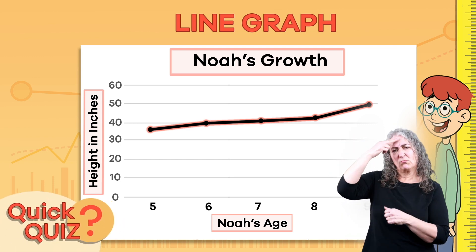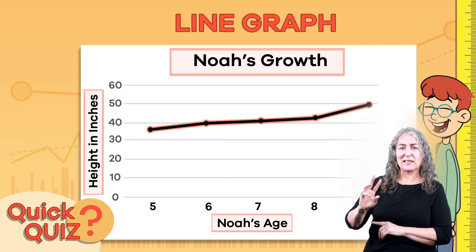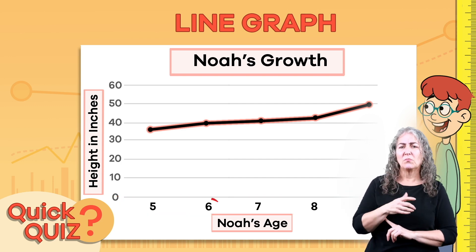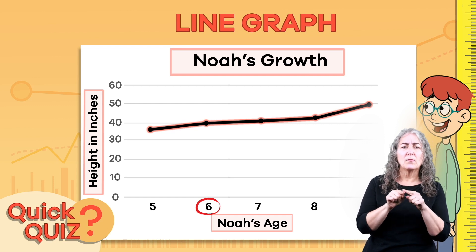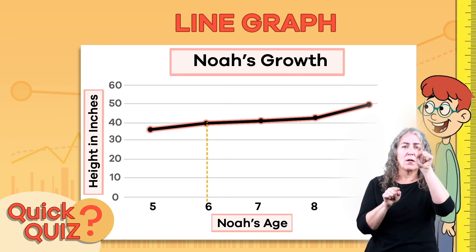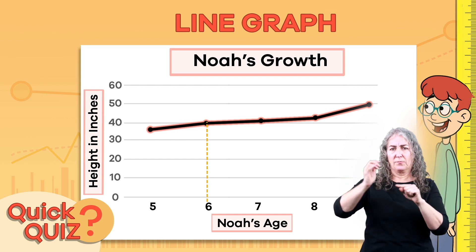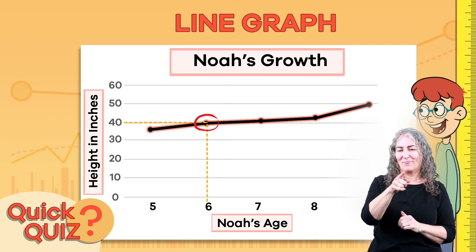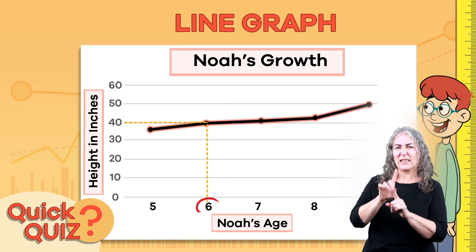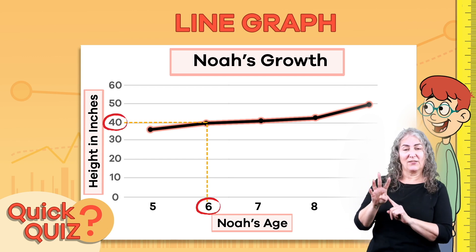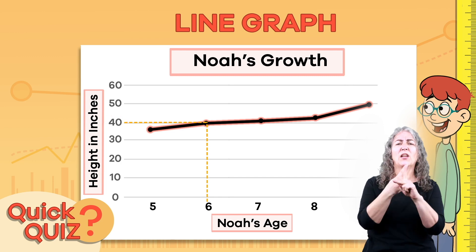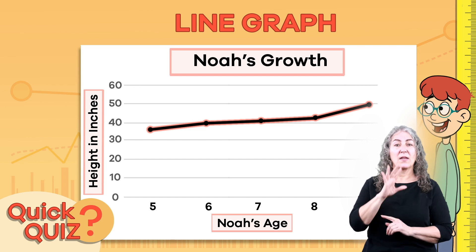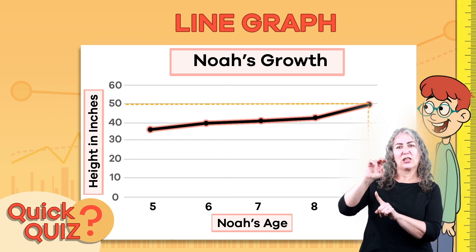Quick quiz! How tall was Noah when he was 6 years old? The bottom of the graph tells us Noah's age, so let's find the number 6 and follow it up to the black graph line. Now let's follow the line over to the inches and see where it lines up — looks like it's right here at 40 inches. So at 6 years old, Noah was 40 inches tall. Now see if you can figure out how tall Noah was when he was 9 years old. At age 9, Noah was 50 inches tall.